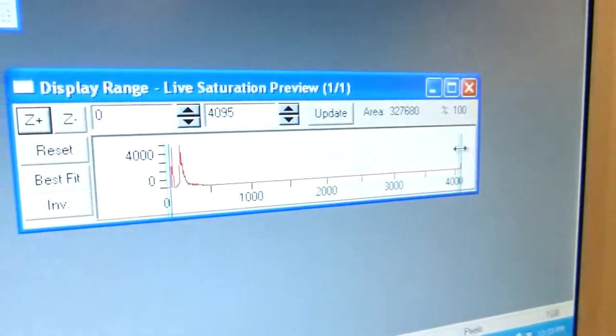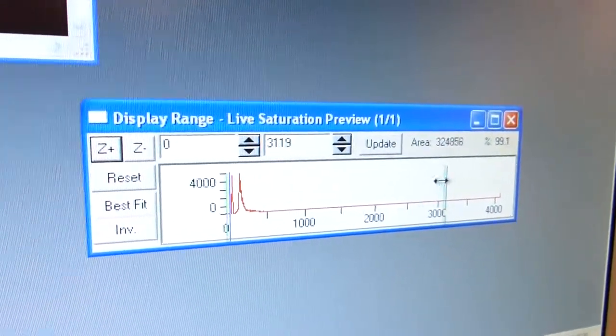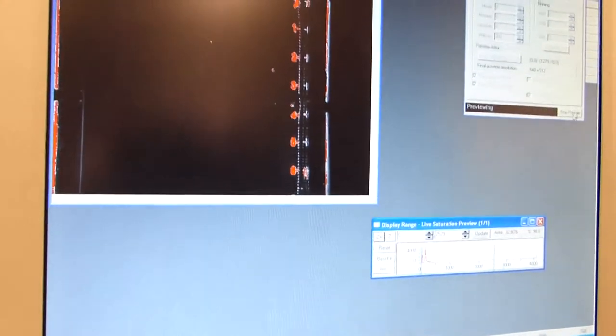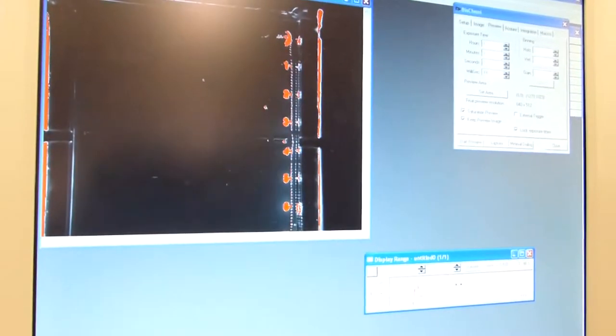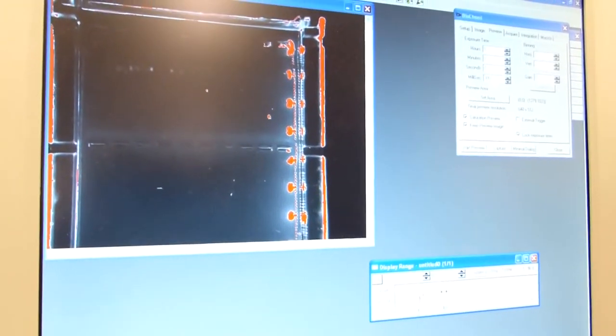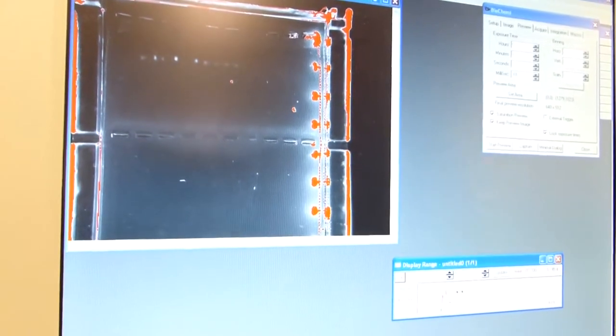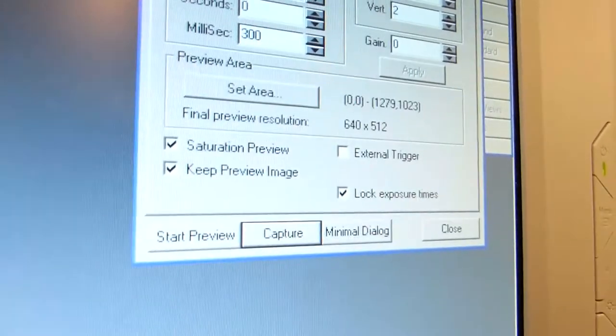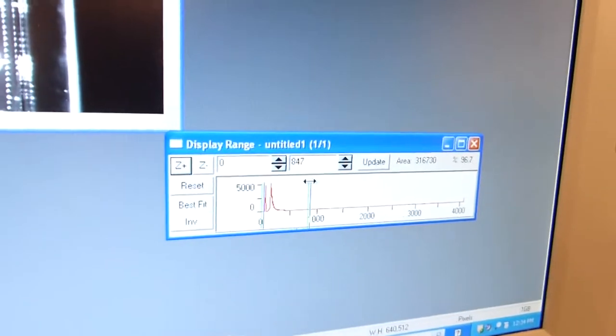From here you can start a preview and then go to edit display range. From here you can slide this green bar, green and blue bar on the left. Hit stop preview and then slide this bar until you are happy with your image or find the setting where you can best see the DNA. From here you can hit capture.